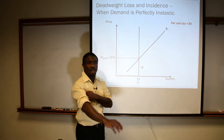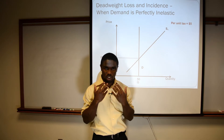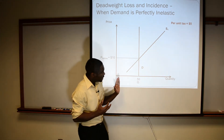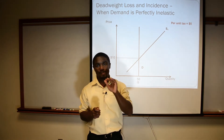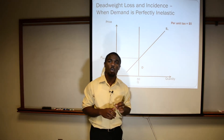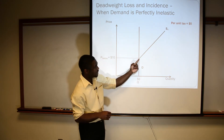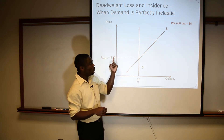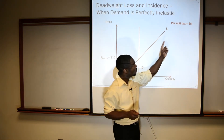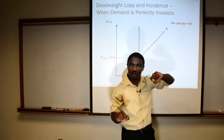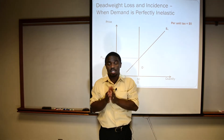How do we represent this in our standard demand and supply analysis? Think about it this way. The supply function can be interpreted as: tell me how many units of the good you want to buy, and I, the firm, will tell you the minimum price I'm willing to sell you that quantity for. So in this case, you want 50 units — trace it up, it hits the supply function there — the minimum I'm willing to sell you 50 units for is a price of $10. But now the government says each unit of the good that you sell, $5 doesn't belong to you the supplier, it belongs to us the government.